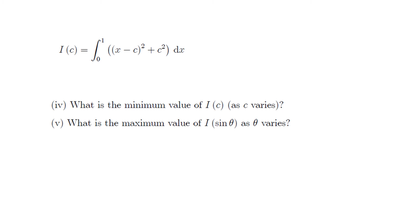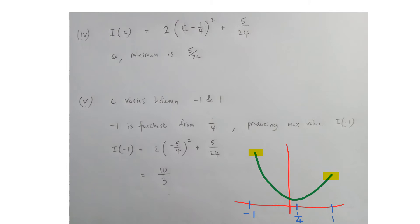For part 4, what's the minimum value of i(c) as c varies? Completing the square again: i(c) = 2(c − 1/4)² + 5/24. The completed square form immediately gives the minimum value as 5/24, occurring when c = 1/4. So the vertex of this quadratic in c is at (1/4, 5/24).